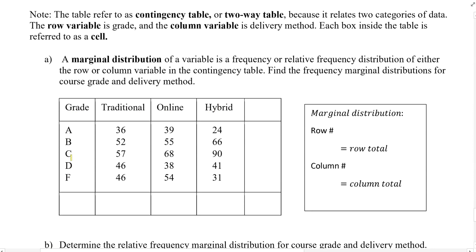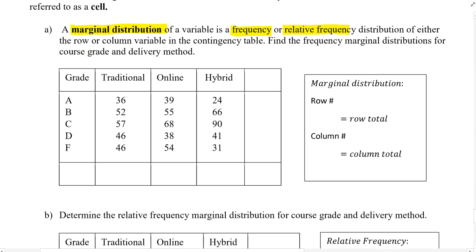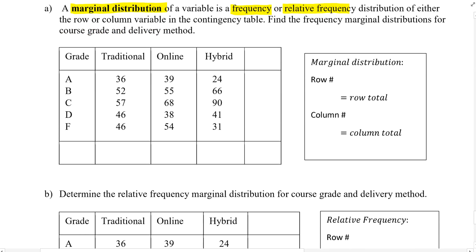The marginal distribution of a variable is a frequency or relative frequency distribution for either the row variable or the column variable in a contingency table. We'll complete the row totals and column totals to get both frequency and relative frequency marginal distributions. For part (a) we'll do the frequency, and for part (b) we'll do the relative frequency.